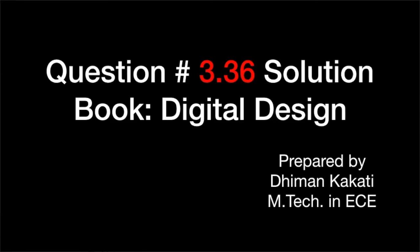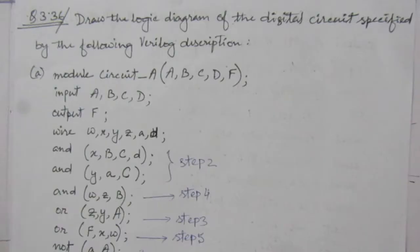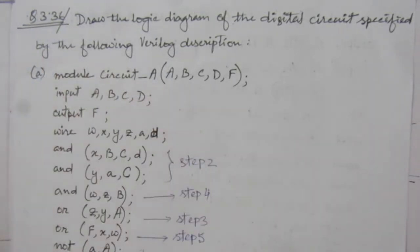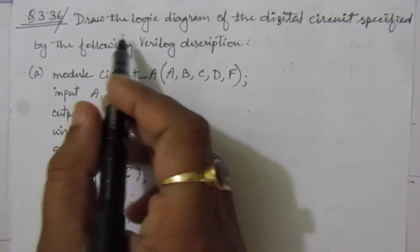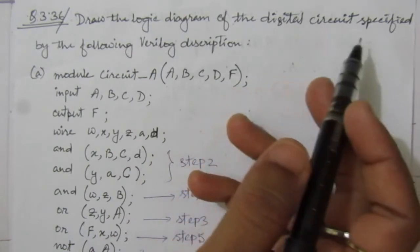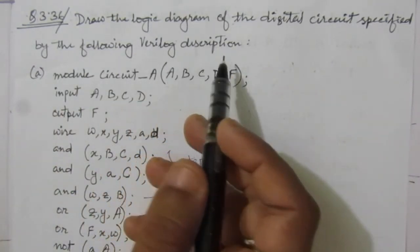Dear students, I welcome you all to this problem solution series in digital electronics. I am solving the problems from the book Digital Design by Maurice Mano and Michael C. Ciletti. In this video I am solving problem number 3.36 from chapter three. The problem is: draw the logic diagram of the digital circuit specified by the following Verilog description.